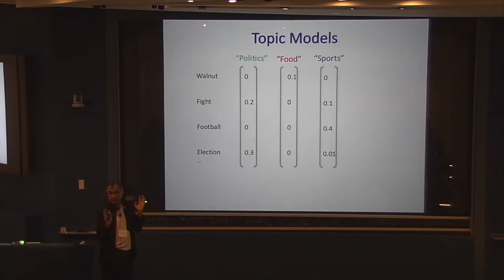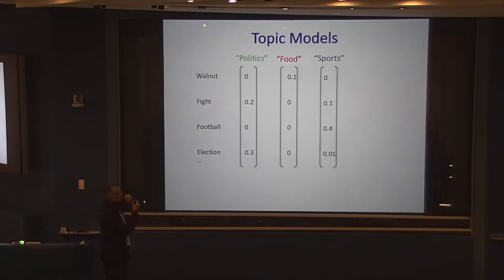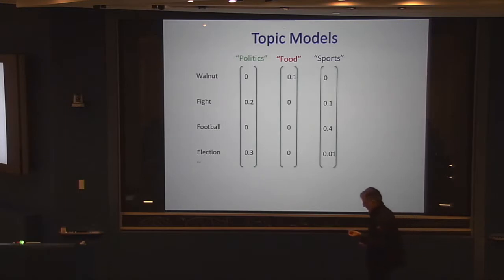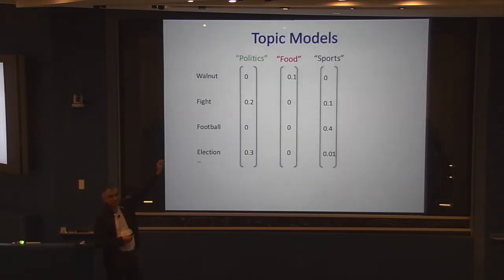Just looking at which words appear in a document, you can get a pretty good idea of what it's about — whether it's politics, food, or sports. Documents may be a mixture of topics. For instance, a document might be 0.7 about politics and 0.3 about sports. Each topic is a ground truth distribution of words — the numbers in the columns sum to one — and if you take 0.7 times the politics vector plus 0.3 times the sports vector, you get another distribution on words.